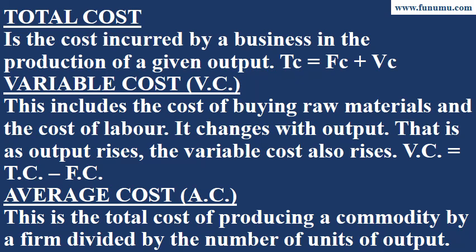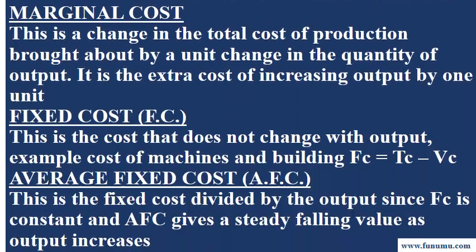VC equals TC minus FC. Average cost (AC) is the total cost of producing a commodity by a firm divided by the number of units of output. Marginal cost is the change in the total cost of production brought about by a unit change in the quantity of output. It is the extra cost of increasing output by one unit.